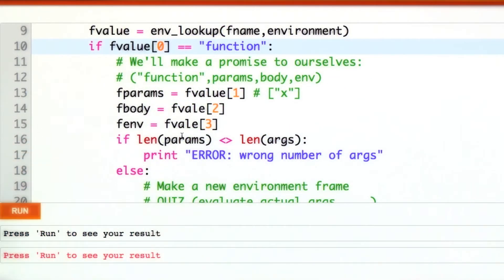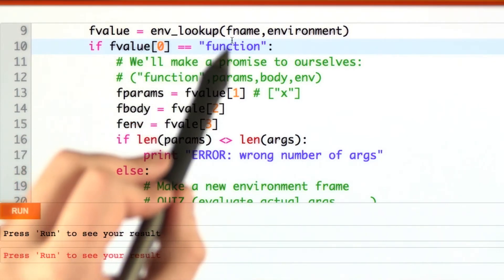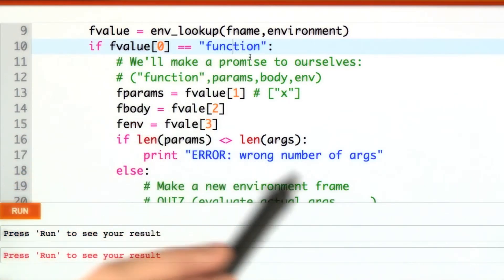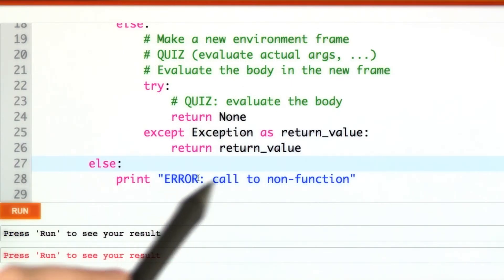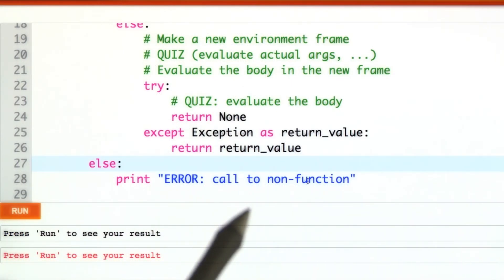All the way up top, they're trying to call something like square root. Square root better be a function and not some string or some number. All the way down here, we check for that. If we try to call something that was not a function, we'll just print out an error.